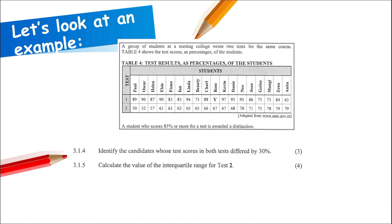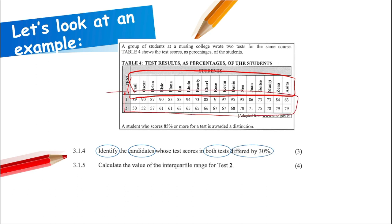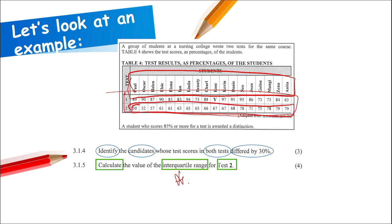Looking at another past paper example with a table: the question says 'identify the candidates whose test scores in both tests differed by 30%' — so we look at both sets of data. The next question says 'calculate the value of the interquartile range for Test 2' — so we only look at that part of the data. Approaching questions this way helps you know exactly how to answer them.